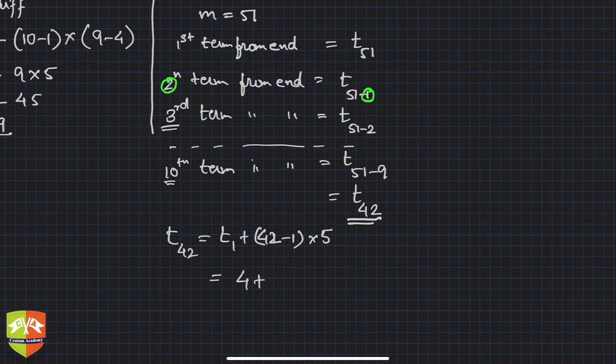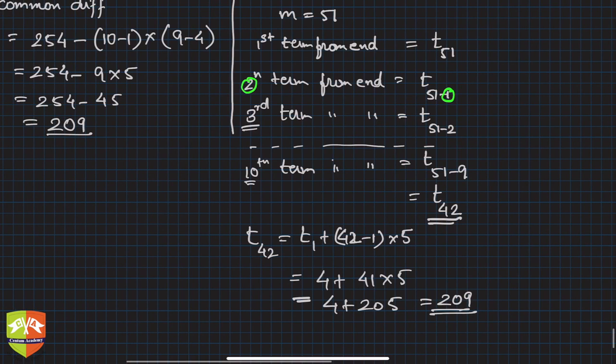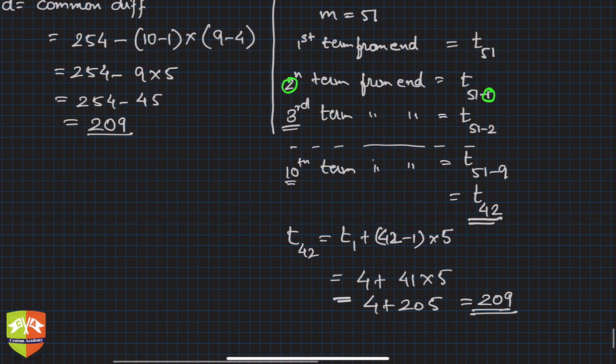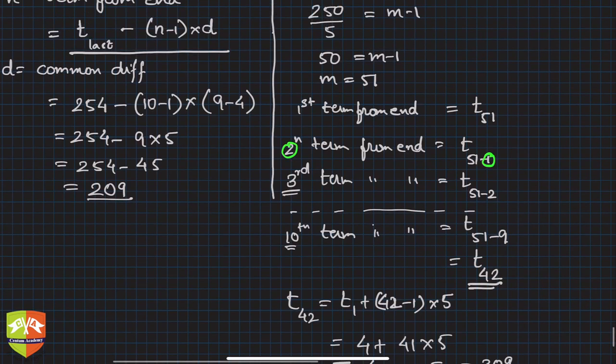And then it is 41 into 5. So if you see, this is 4 plus 205, which is 209. So both ways you can find out the nth term from the end.